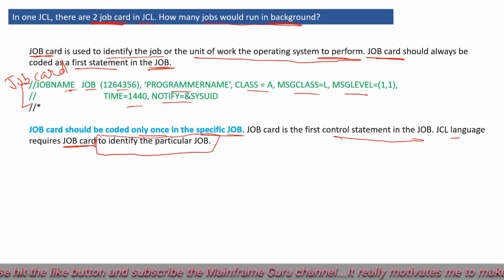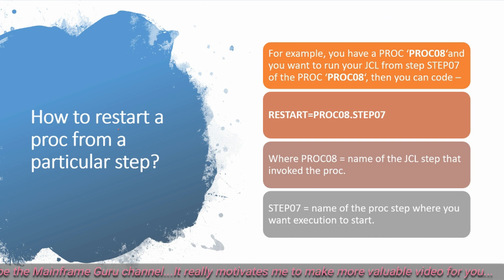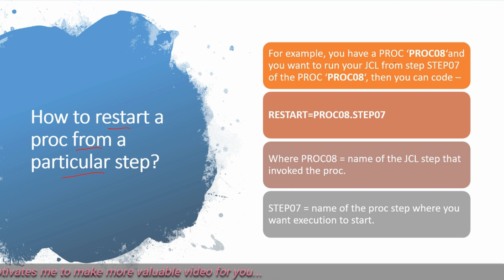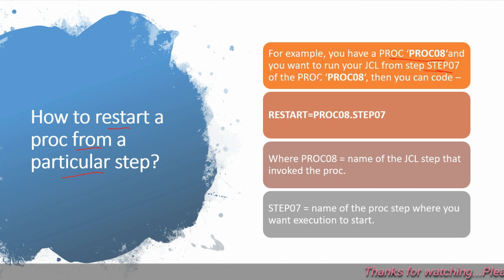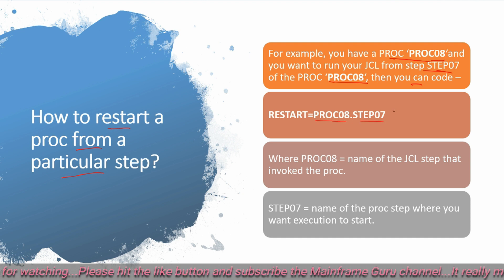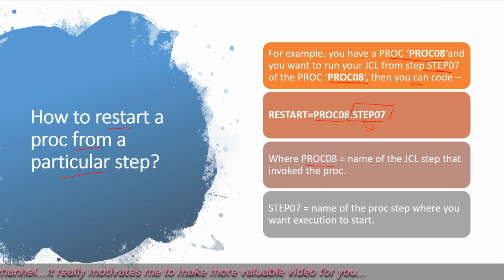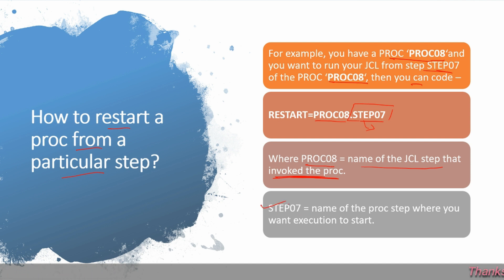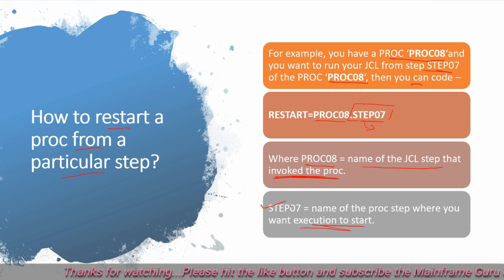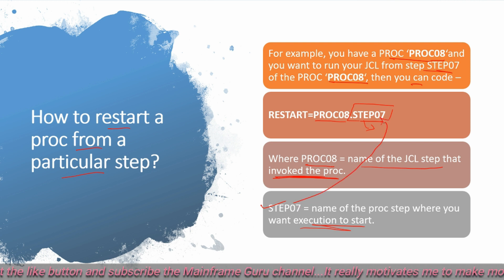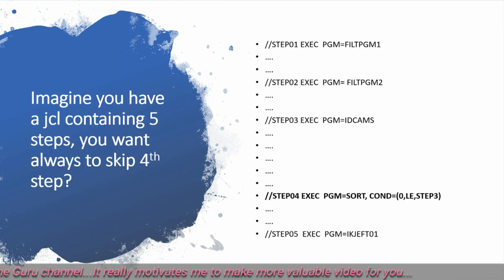Next question: how can you restart a PROC from a particular step? For example, if you have PROC8 and you want to run from step 07 of PROC8, you code the PROC name followed by a dot and then the step name — like PROC8.STEP07. This means execution will start from step 07. You specify this in the RESTART parameter.